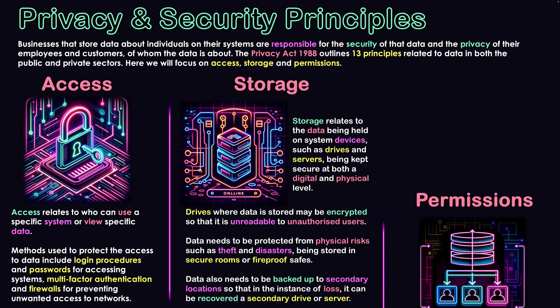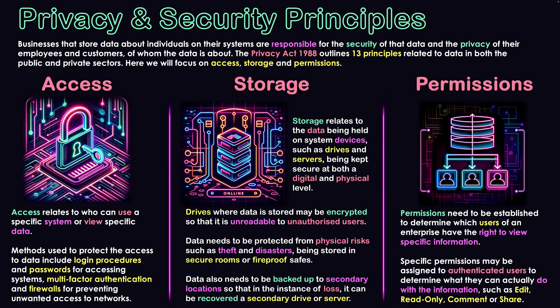The final category is Permissions. We've been mentioning authenticating users, and while authenticated users should have access to the network, not all data should be viewable by all authenticated users. Certain people need data relevant to their jobs, and for others that data may not be relevant — so to maintain privacy, they shouldn't be viewing it. We establish different levels of permissions to control who has the right to view specific information, correlated to workers' jobs.